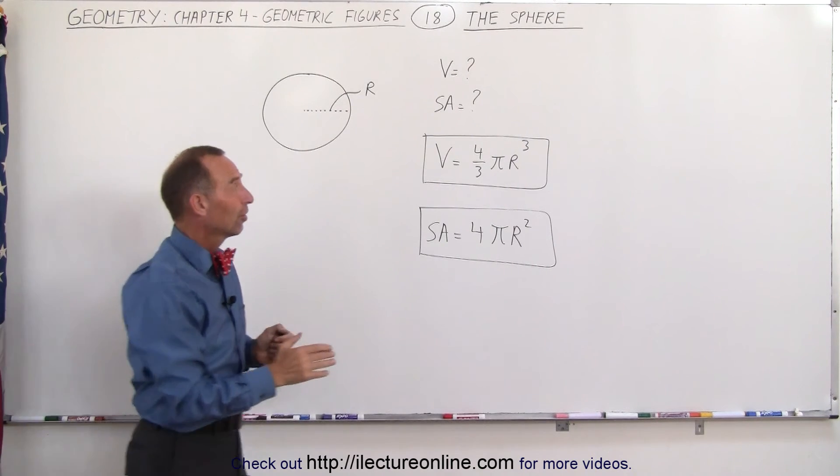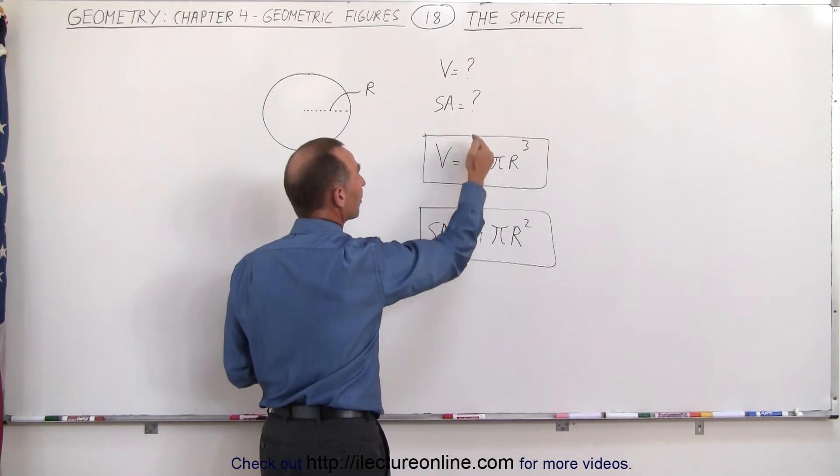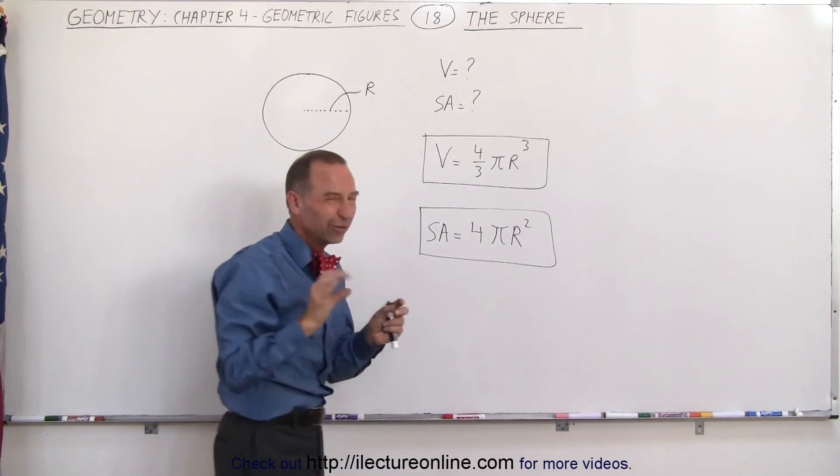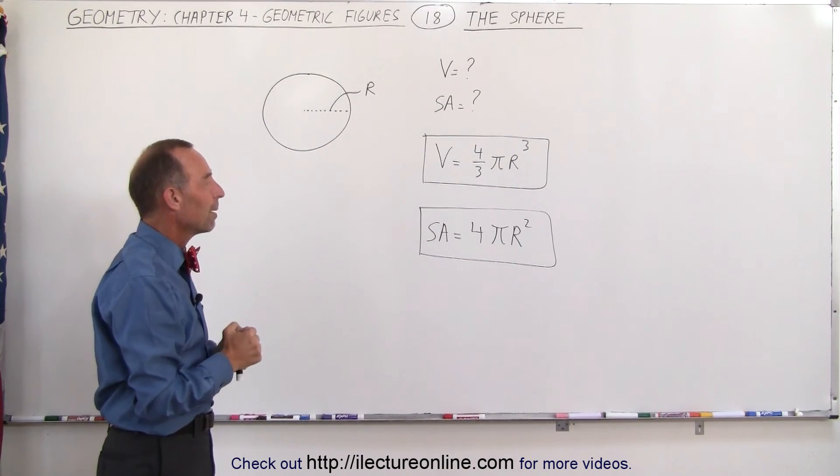Notice you have 4 pi r cubed, 4 pi r squared, the only thing is with the volume it's divided by 3. Think of this exponent here coming down here and there's some truth to that when we use calculus but at least at this point that would be sufficient to remember.